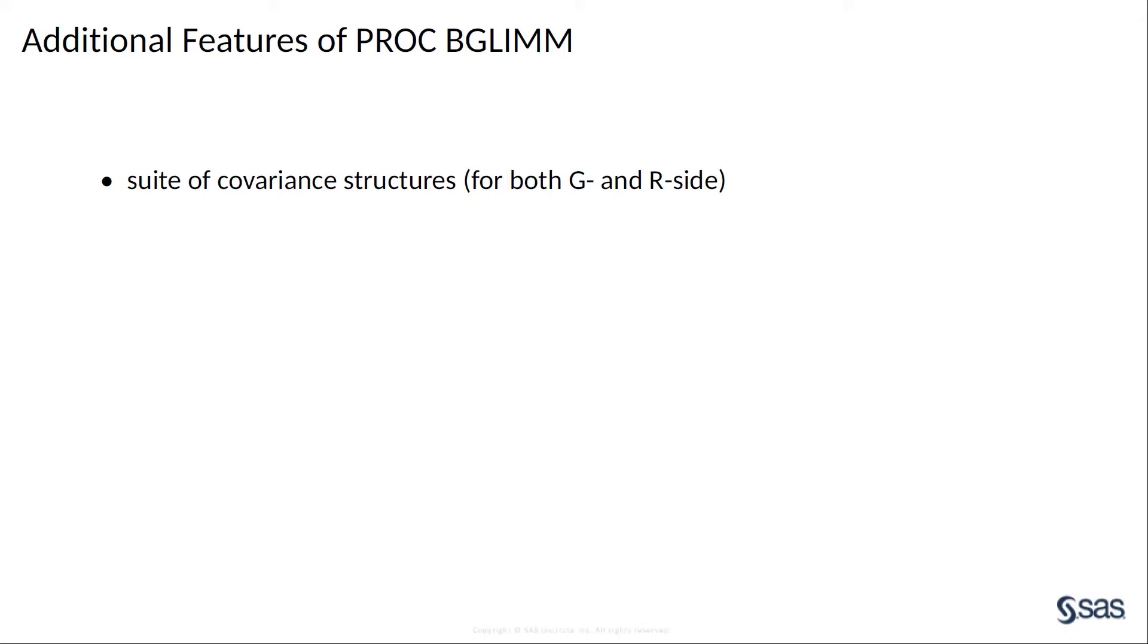You can model heterogeneity in the covariance to see if there are different groups of subjects in the data that display distinctive correlation patterns, but are homogeneous in the same group.